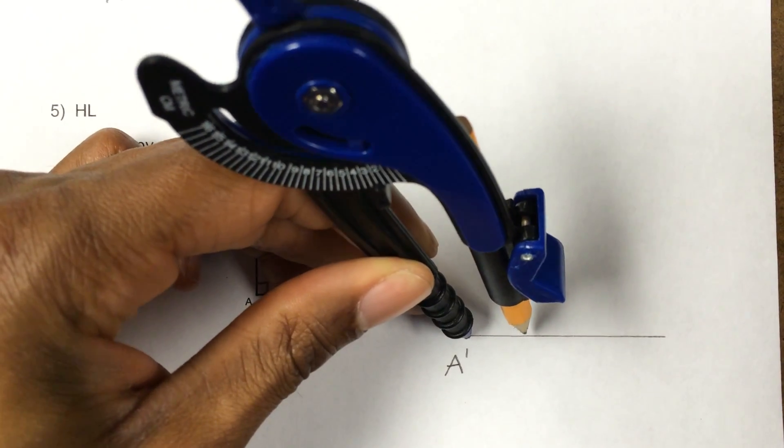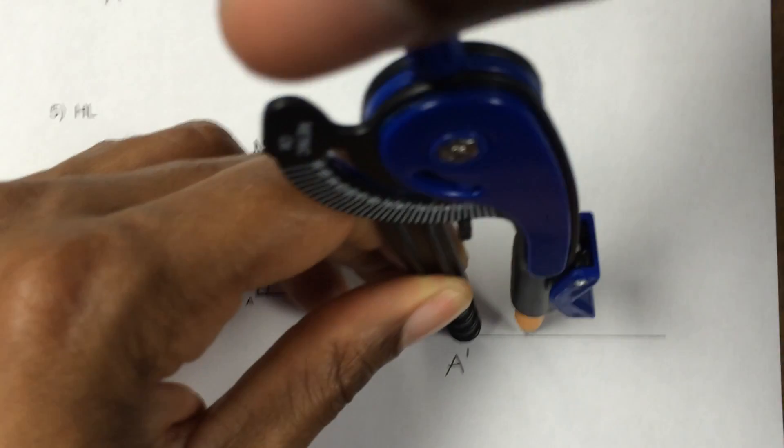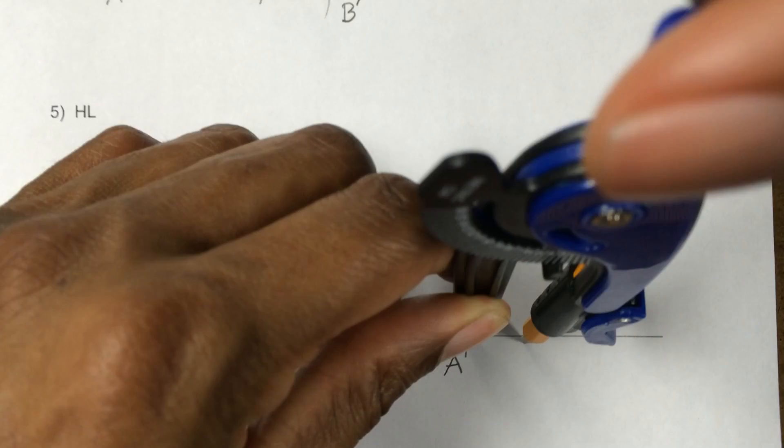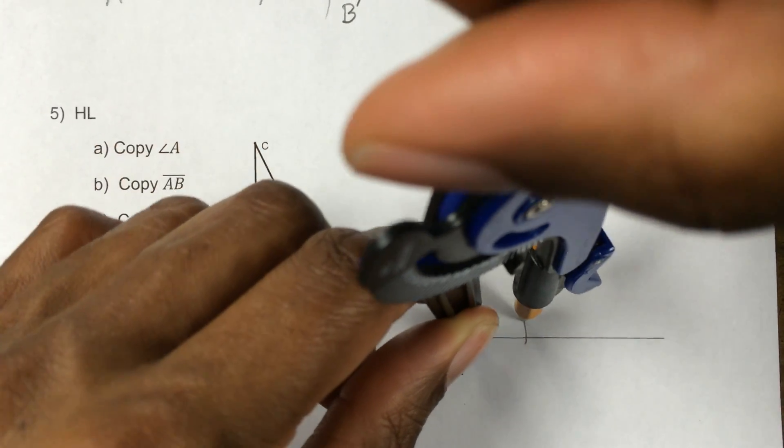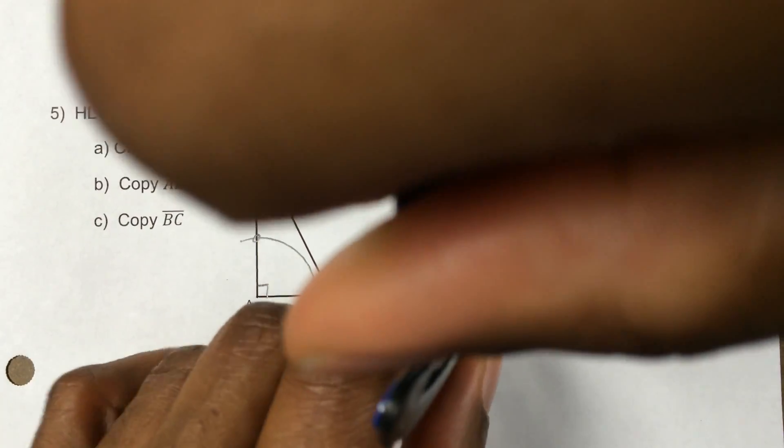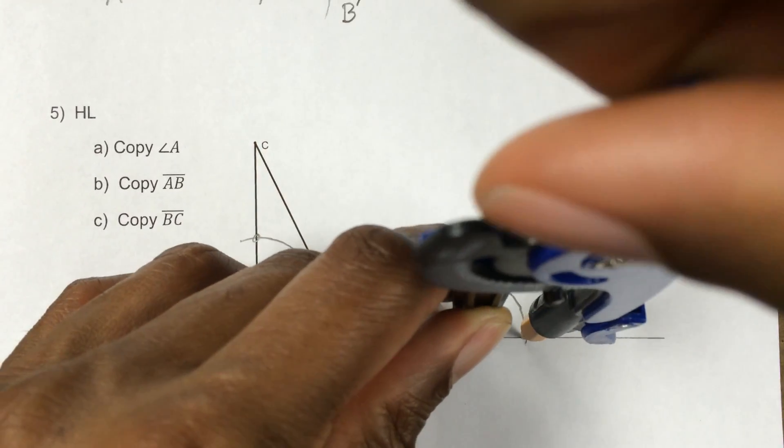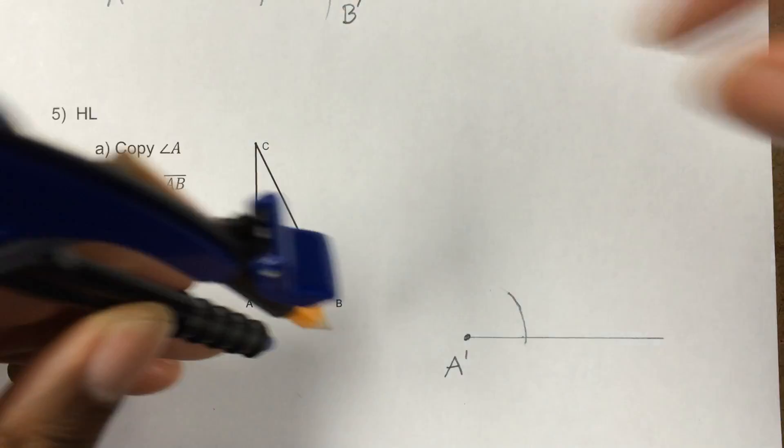Now I'm going to duplicate that arc on my new picture, like this. I know I'm blocking the camera for a second here, but bear with me until I get this drawn. I'm slipping.